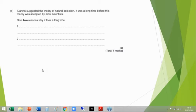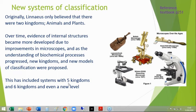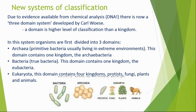Linnaeus only believed there were two kingdoms — animals and plants — but now we know there are at least five. We know that because of improvements in microscopes and our understanding of biochemical processes like DNA. Because of this we've created new kingdoms and even new models. The model scientists actually use today is the domain system.